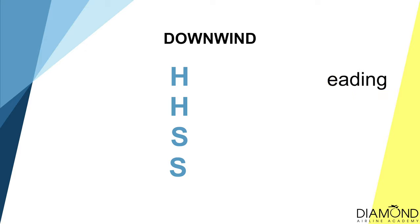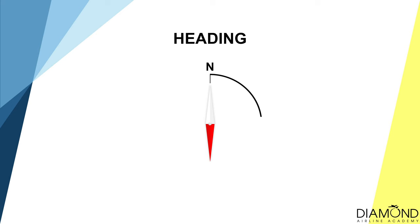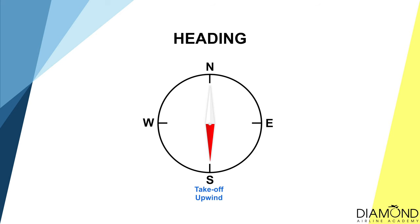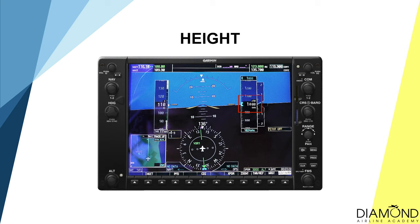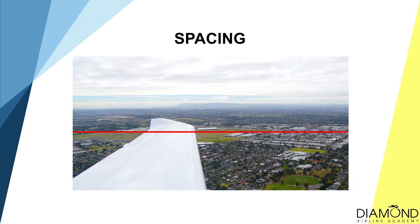Once established on downwind, use the HHSS work cycle to fly accurately: Heading, Height, Speed, Spacing. Heading should be the exact opposite of the runway heading — for example if you took off towards the south, you should be facing north. Maintain 1,000 feet circuit height. Speed at normal cruise power should be around 110 to 120 knots. Spacing refers to the lateral distance from the runway — the correct spacing is roughly the silver fuel cap over the runway for a left-hand circuit.